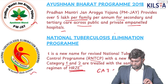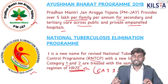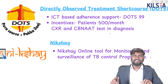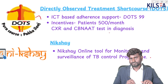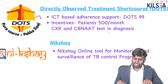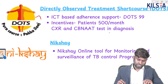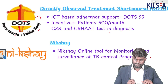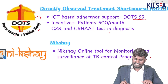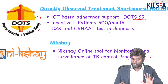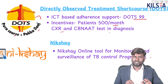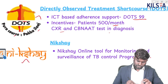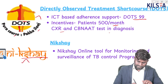Category 1 and 2 are treated with the same regimen of HRZE. This image is going to be called DOTS — Directly Observed Treatment Short Course. It says 'Pura Kors Pakka Ilaaj.' It has ICD-based adherence support. DOTS 99 incentivizes patients about 500 rupees a month, and patients undergo chest X-ray and CB-NAAT test for diagnosis. This one is going to be NIKSHAY.